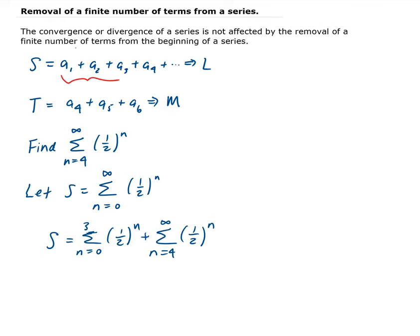Let's figure out what S is converging to. This is a geometric series with r equals 1/2. Since r is less than 1, it's converging, so it's going to converge to 1 over (1 minus 1/2). That gives us the value of 2.